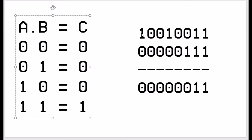In this example we have 1,0,0,1,0,0,1,1 and we're going to AND it with 0,0,0,0,0,1,1,1. Effectively we're saying we only want the last three bits to be passed through in the final result. So the result is: 1 and 0 is 0, 0 and 0 is 0, 0 and 0 is 0, 1 and 0 is 0, 0 and 0 is 0, 0 and 1 is 0, 1 and 1 is 1, 1 and 1 is 1 — based on the truth table.